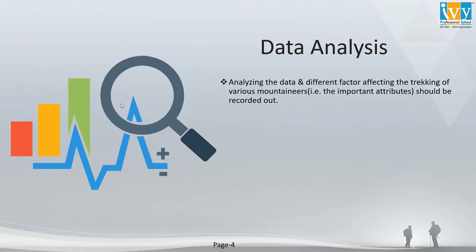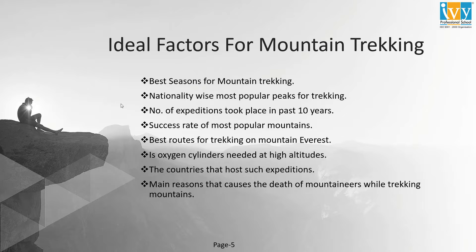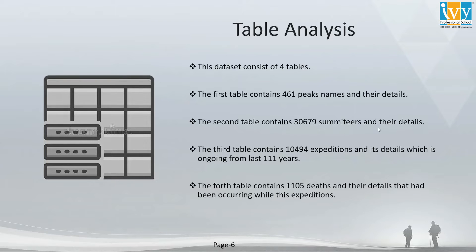For the data analysis, we are analyzing different factors affecting the trekking of various mountaineers. These are the ideal factors for mountain trekking. The data consists of four tables: Peak, Submitters, Expedition, and Death.